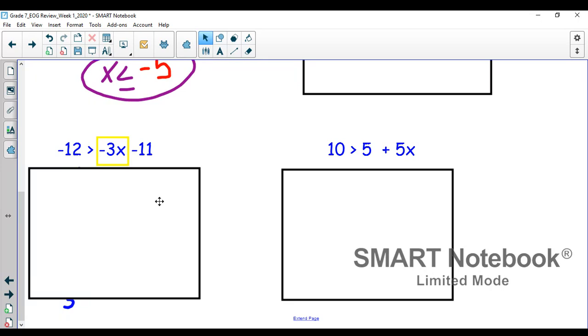Okay, when we notice this one in the yellow, a couple things. First, it is a negative coefficient. So I'm boxing that to make sure I flip the sign at the end. I also see that the variable is on the right, which means the variable needs to stay on the right hand side the entire problem. We're not moving the variable around. Then we just solve.